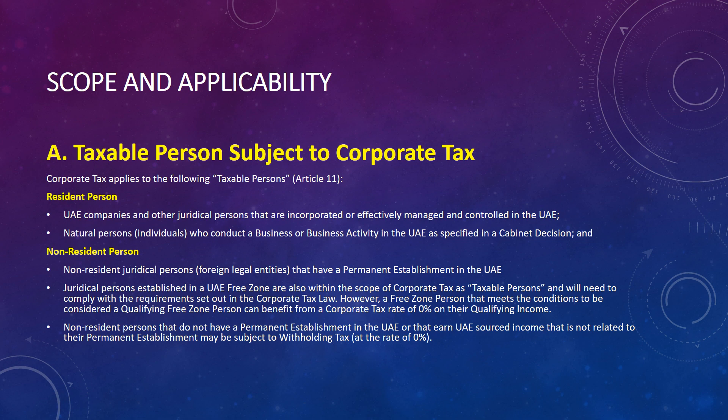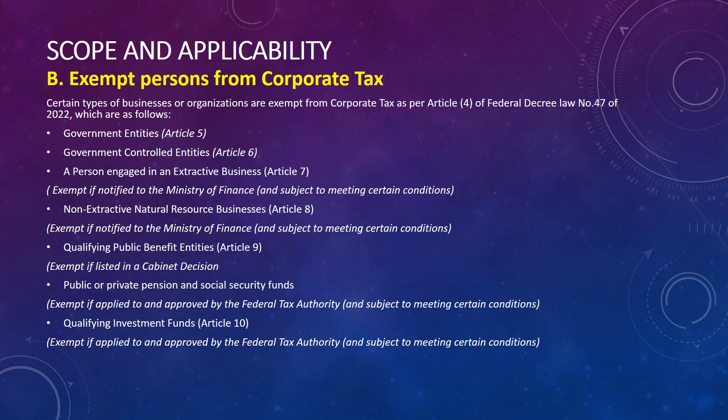Free zones will still enjoy zero percent corporate tax on qualifying income. We will see the details of what qualifying income means. They have to fulfill certain conditions to claim zero percent corporate tax. A non-resident person that does not have a permanent establishment in the UAE, or that earns UAE source income not related to their permanent establishment, may be subject to withholding tax, which is right now at zero percent. The government can increase this zero percent to any percentage in the future — similar to what in India we call TDS, tax deducted at source.